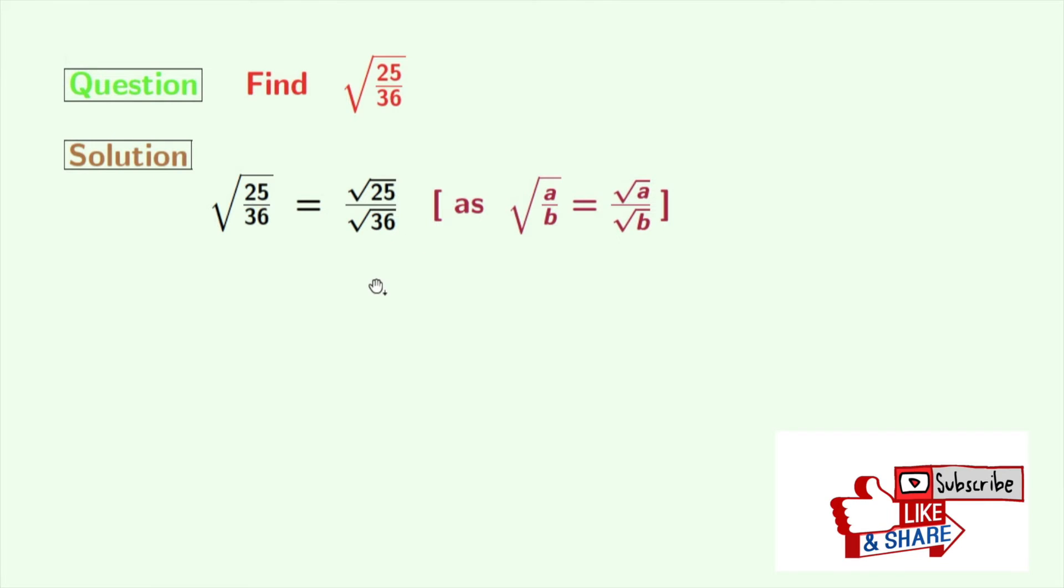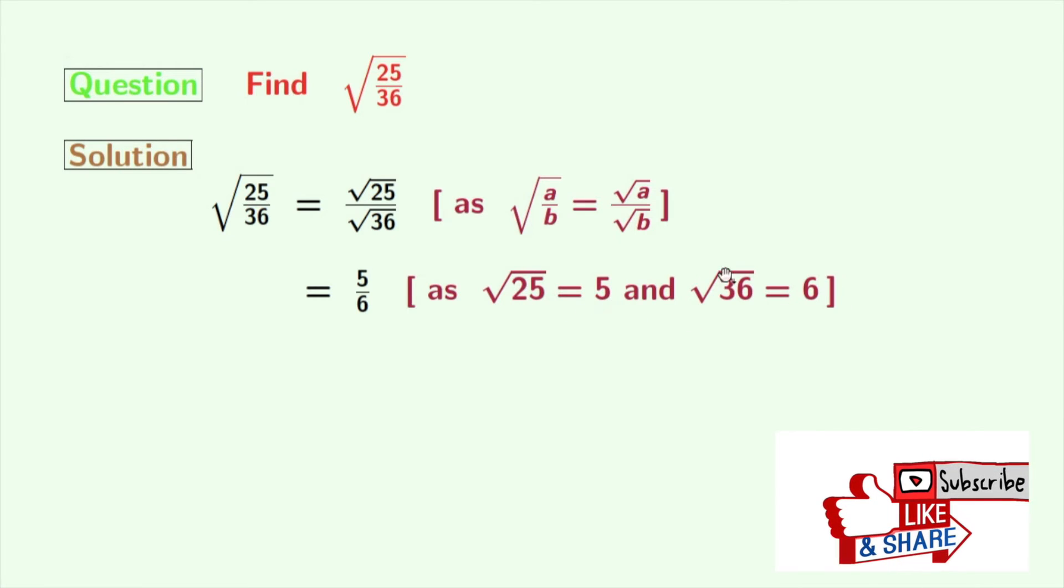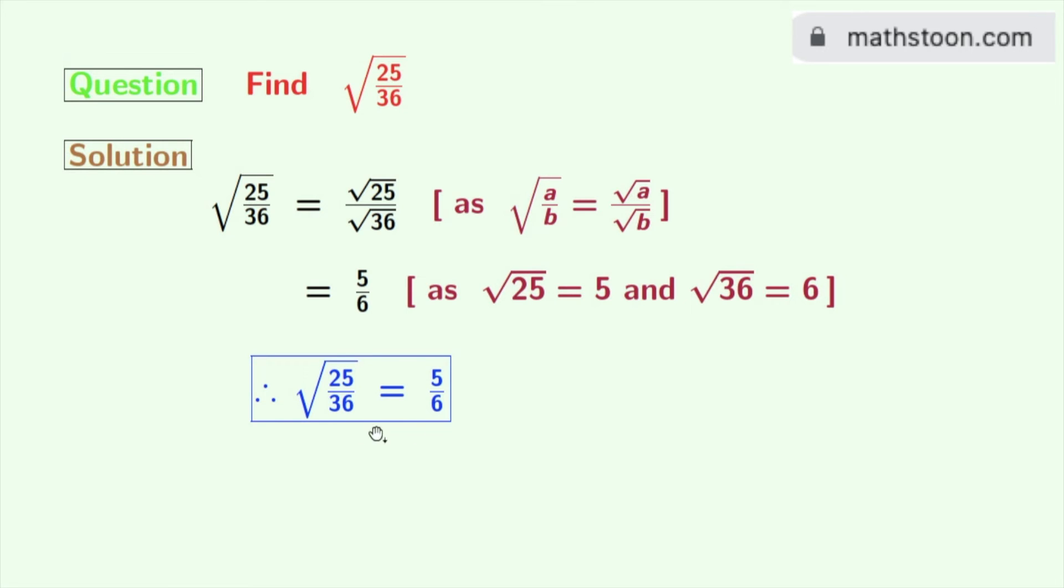Now as root over 25 is 5 and root over 36 is 6, so we get root over 25 divided by root over 36 is equal to 5 by 6. So finally we get the value of the given square root which is 5 by 6, and this is our final answer.